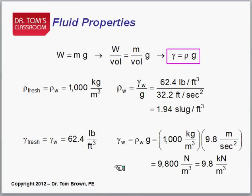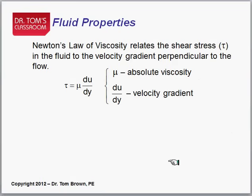Similarly, if you need the gamma in the SI system, take the 1,000 kilograms per cubic meter, multiply by gravity, 9.8, get 9,800 newtons per cubic meter, or typically there we use 9.8 kilonewtons per cubic meter. One of the big properties, that's the main ones, density, specific weight, and specific gravity. The big one in fluids is viscosity.